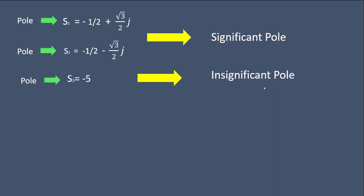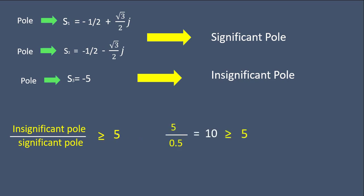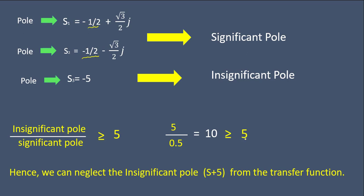Now we need to check whether the concept of dominant pole is applicable. We find the ratio of the insignificant pole magnitude to the significant pole magnitude — it should be greater than 5. The insignificant pole value is 5 and the significant pole real part is 0.5, so the ratio is 5 / 0.5 = 10, which is greater than 5. Hence the concept of dominant pole is applicable and we can neglect the insignificant pole (s + 5) from the transfer function.